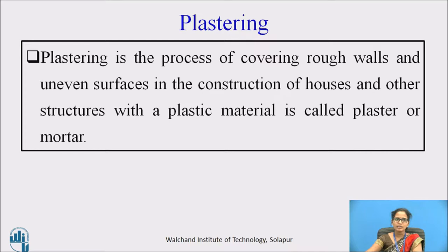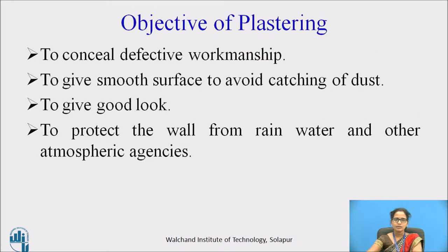Plastering is the process of covering the rough and uneven surfaces in the construction of houses with a plastic material to form an even or regular surface. The materials which are used for plastering are called as ordinary cement, admixtures, lime or clay, aggregates, and water.